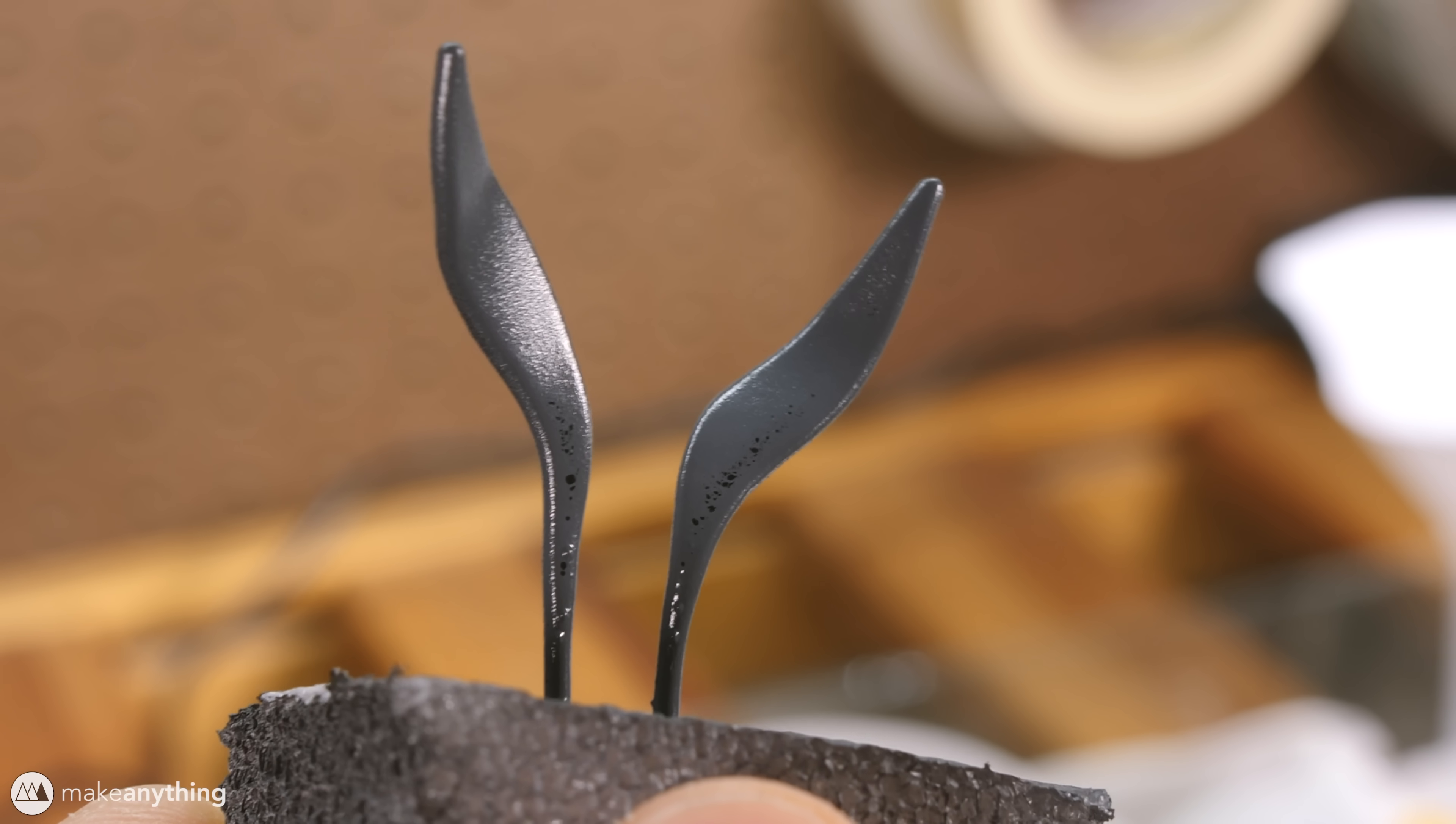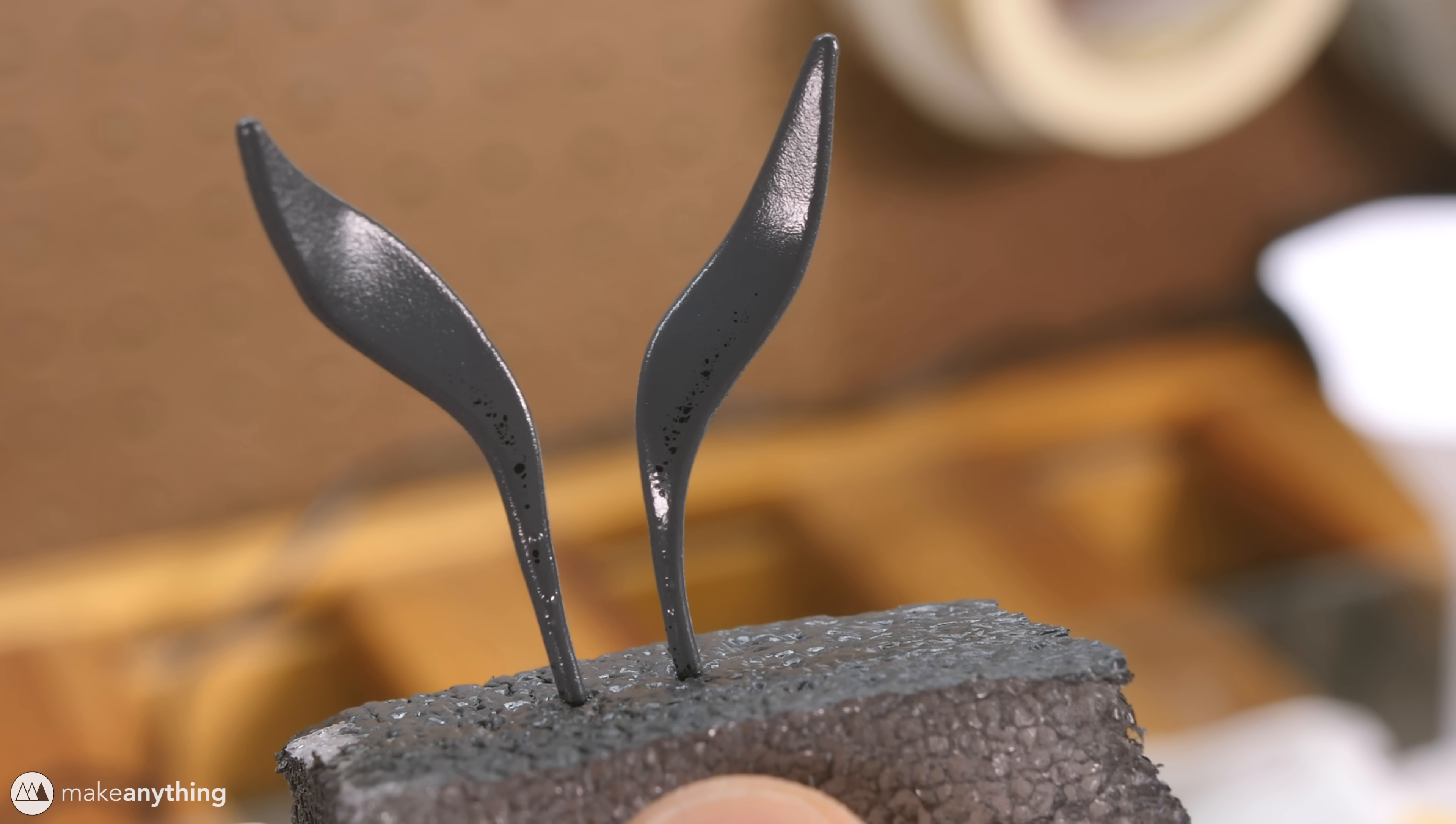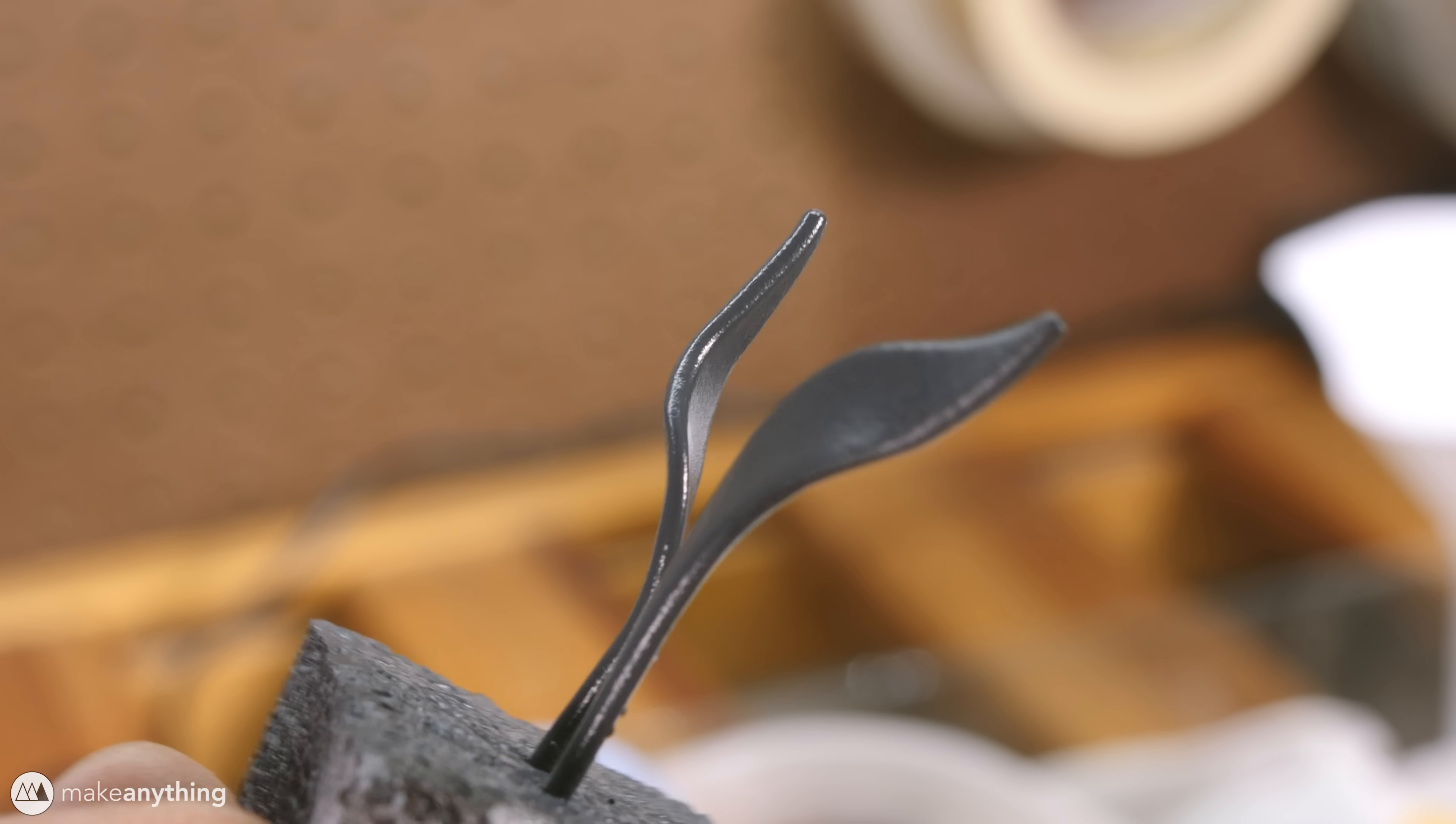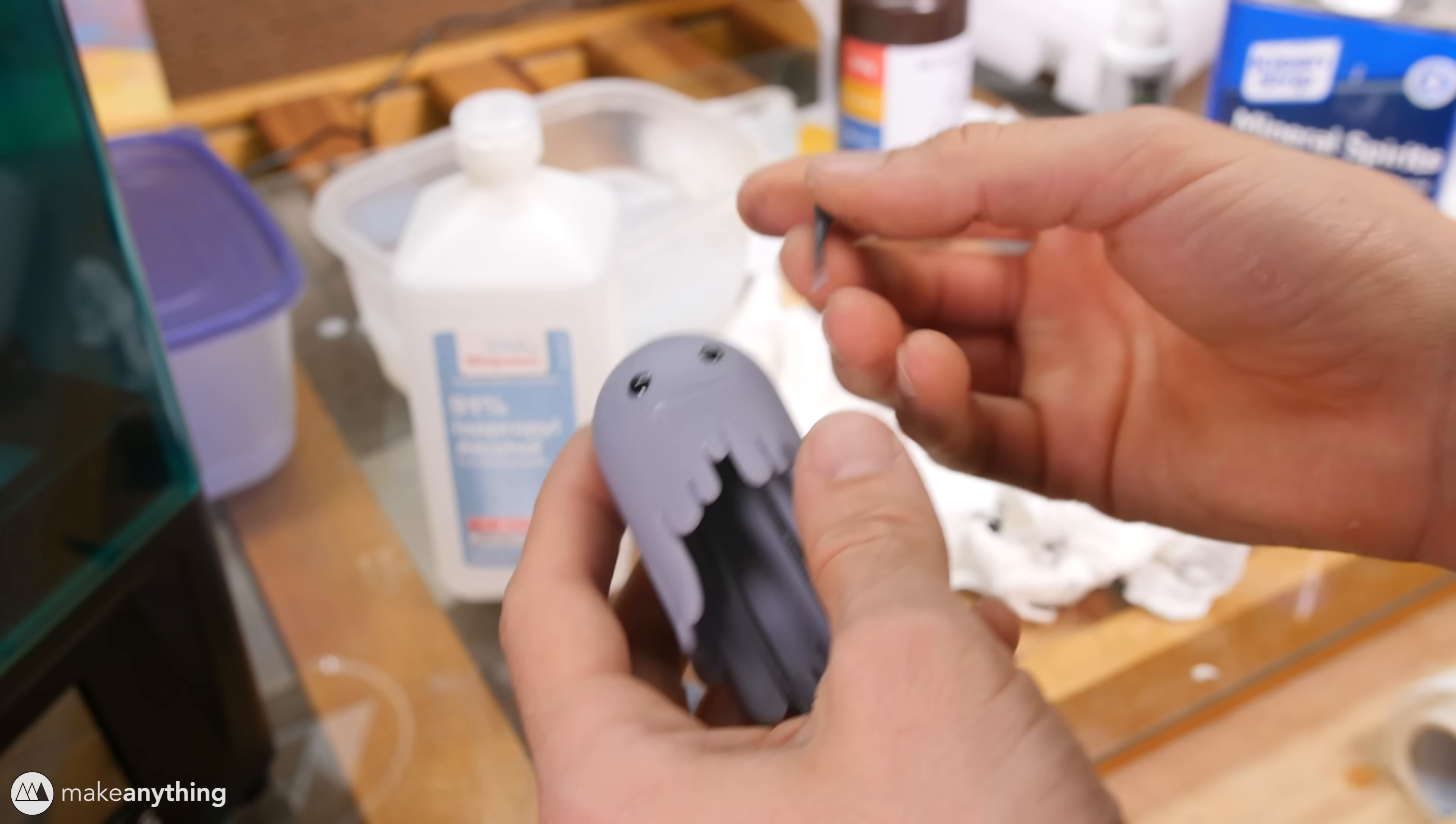Here's how the ears turned out and as you can see some of that black spray paint actually came through the gray which I consider a happy accident. So once all that paint is dry we can go ahead and assemble our little guy.